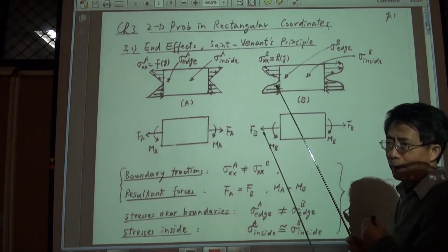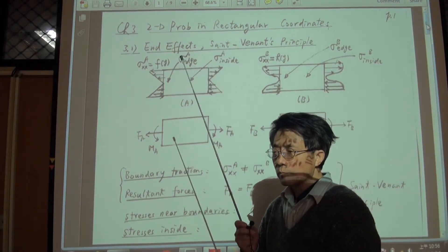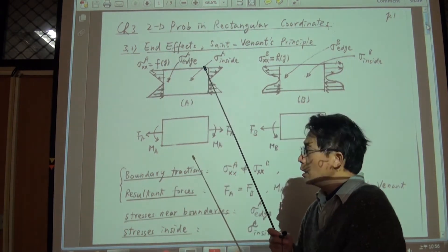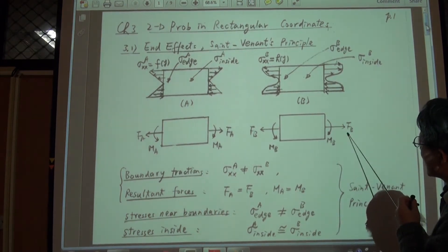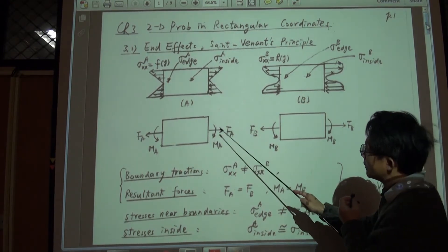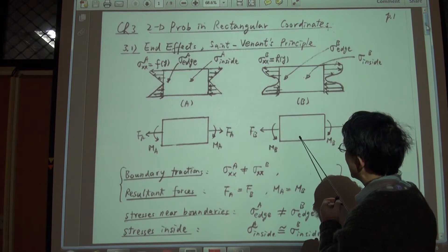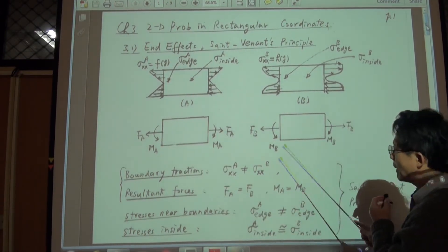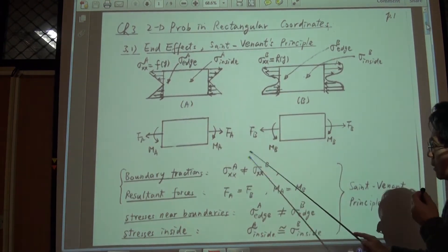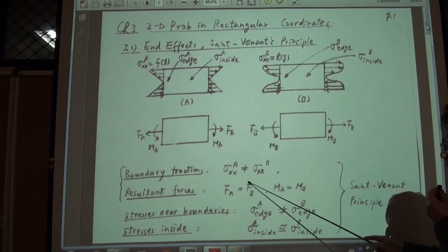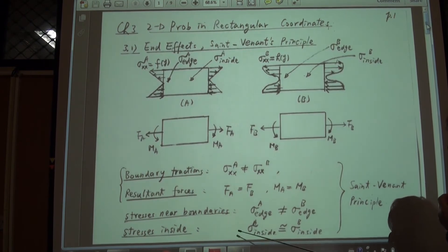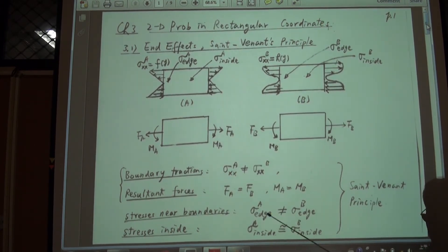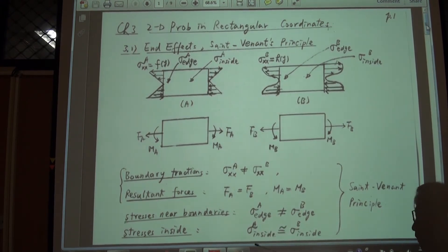The resultant forces and resultant moments represent the effect on the global behavior of the plate. So if these two plates have the same resultant forces and resultant moment, we expect that inside the plate the stress state and the deformations are very similar. Even though on the boundary the stress distributions are not the same, if the resultant force and resultant moment are the same, then inside the plate the stress will be approximately equal to each other.